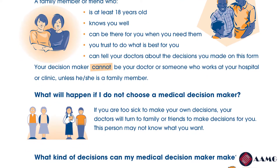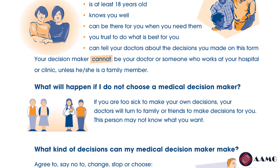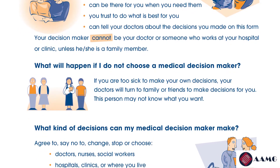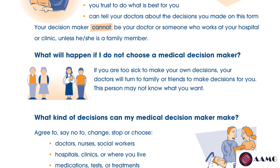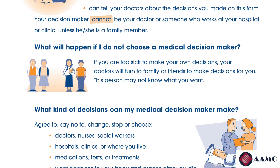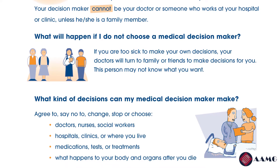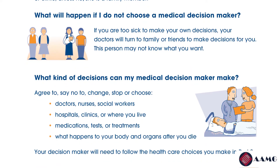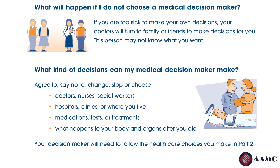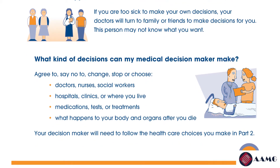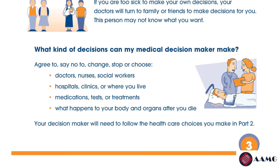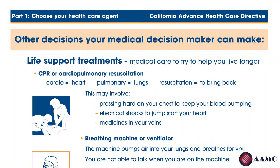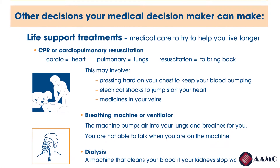The second question is: what will happen if I do not choose a medical decision maker? If this happens and you're too sick to make your own decisions, your doctors will turn to your family members or friends to make the decisions for you. This is not in your best interest because this person may not know what you want. The third question goes over what kind of decisions can my medical decision maker make. He or she can agree to, say no to, change, stop, or choose your doctors, nurses, social workers, which hospitals or clinics you're treated at, or where you live, your medications, tests, or treatments.